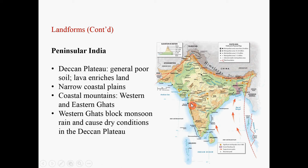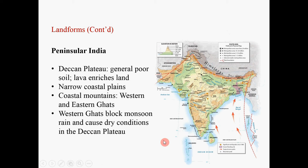You also see the coastal mountain ranges here — the Western Ghats and the Eastern Ghats. The Western Ghats are relatively high and they block the monsoon winds, preventing them from fully penetrating inland, which makes the rest of the Deccan Plateau relatively dry and not conducive to agriculture. In addition to the coastal mountains, you also have coastal plains on both the western and eastern sides.